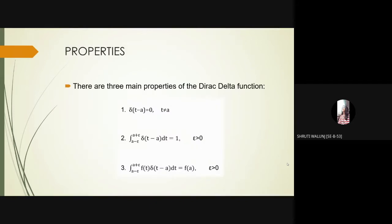There are three main properties of Dirac delta function. First, delta of t minus a is equal to 0 at t not equal to a. Second, integration from a minus epsilon to a plus epsilon delta of t minus a dt is equal to 1 at epsilon greater than or equal to 0. And third, integration from a minus epsilon to a plus epsilon f of t into delta of t minus a dt is equal to f of a at epsilon greater than or equal to 0.